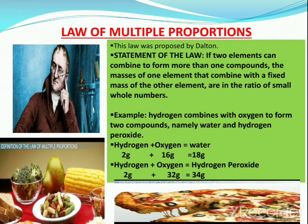The next law is the law of multiple proportions. This law was proposed by Dalton. The statement of the law is: if two elements can combine to form more than one compound, the masses of one element that combine with the fixed mass of the other element are in the ratio of small whole numbers. For example, hydrogen combines with oxygen to form two compounds — water and hydrogen peroxide. Here, a fixed mass of hydrogen (2 g) reacts with 16 g of oxygen to give water (18 g). In another example, 2 g of hydrogen reacts with 32 g of oxygen to form hydrogen peroxide (34 g).